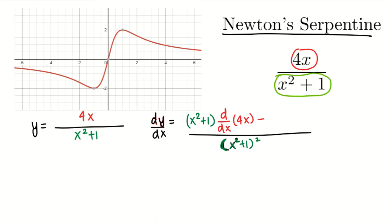now do the reverse. First, differentiate the denominator. So you will have d/dx of x squared plus 1, times the numerator itself. So the numerator is 4x.